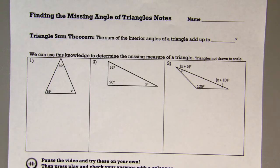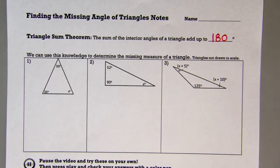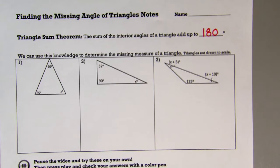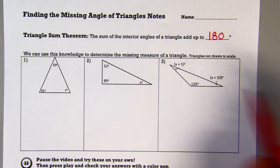Today's lesson is on finding the missing angle of triangles. To do that we're going to use the Triangle Sum Theorem, which is the sum of the interior angles of a triangle add up to 180 degrees. If we look at our first example here, we can use that theorem to help us figure it out.